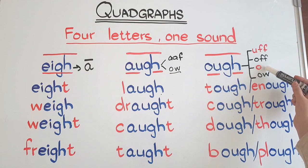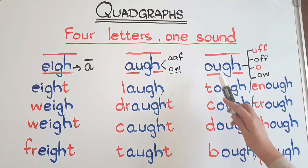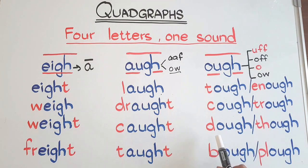Now we'll see examples with the 'o' sound. O-U-G-H as o: dough and though.